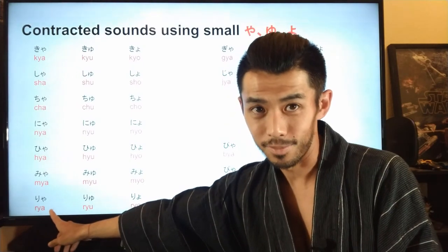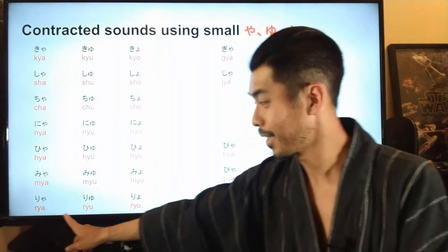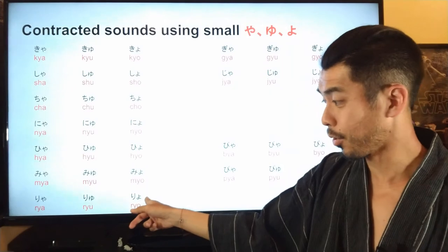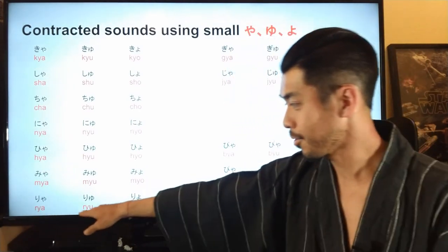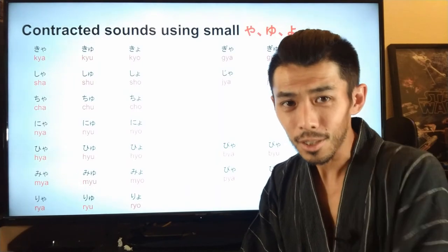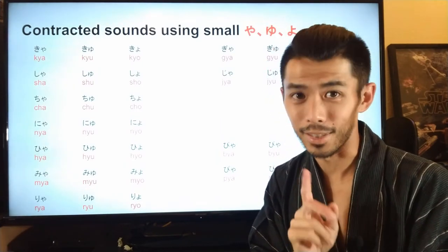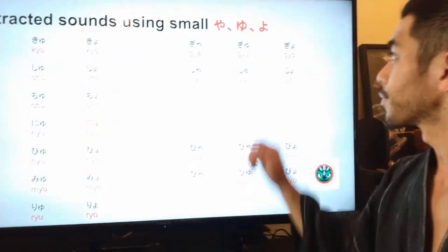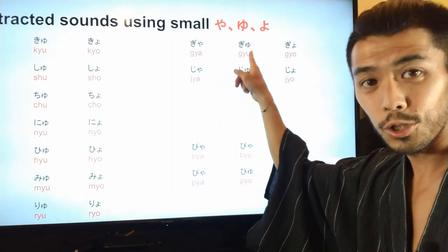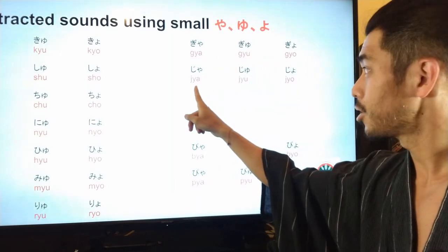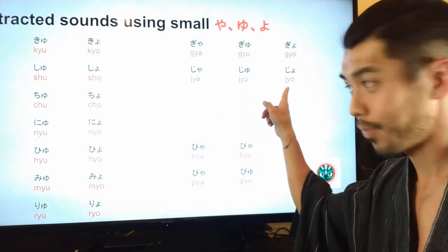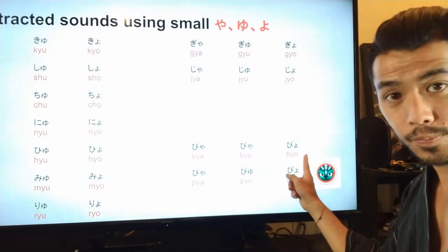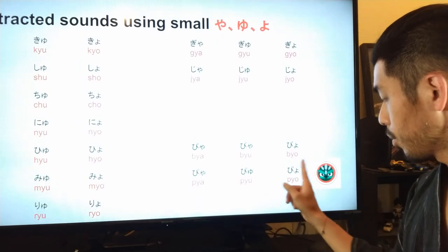The r-y sounds are tricky: rya, ryu, ryo. A lot of people say these three sounds are very similar to Spanish r's, so you might have to roll the r a little bit to get the sound correct. Also: gya, gyu, gyo — ja, jyu, jo — bya, byu, byo — pya, pyu, pyo.